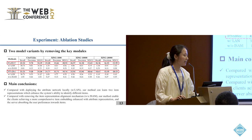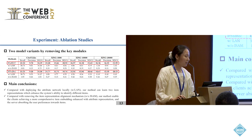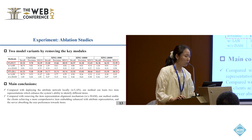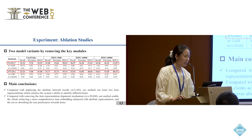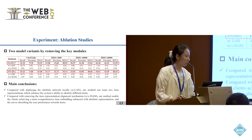For ablation studies, we conduct two model variants by removing key modules. The experimental results show that compared with deploying the attribute network locally, our method can learn more discriminative item representations, enhancing the system's ability to identify different items. Compared with removing the item representation alignment mechanism, our method enables clients to achieve more comprehensive item embeddings enhanced with attribute representation, and the server to absorb user preference towards items.